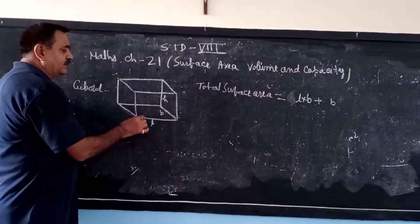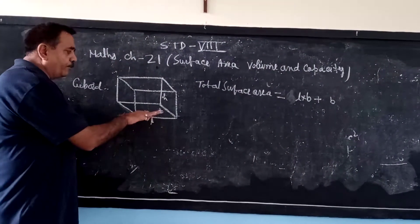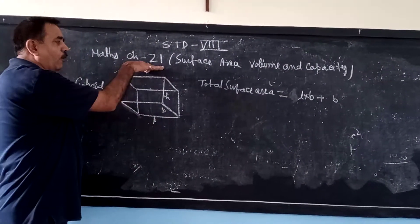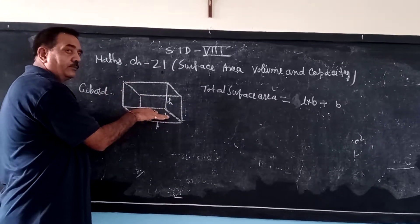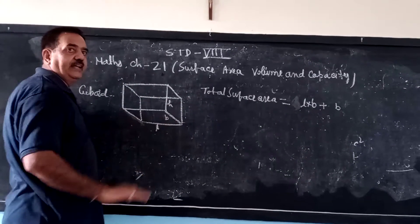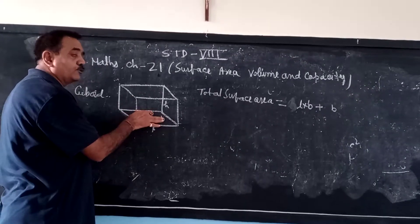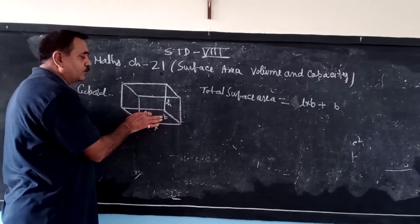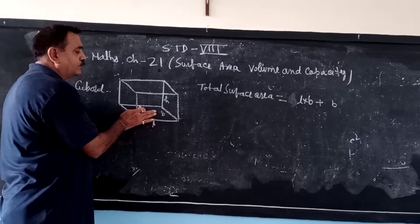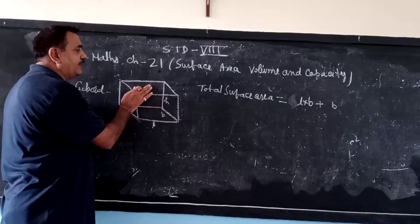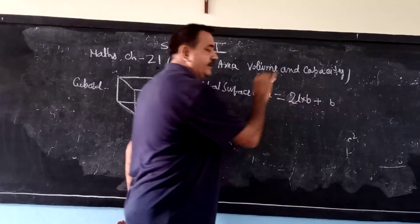This is the cuboid. Say this is length, this is breadth, this is height. So bottom and top — what is the shape of the bottom? The shape of the bottom is a rectangle. What is the area of the rectangle? Length into breadth. So there are two faces like that, so length into breadth plus length into breadth — it becomes twice length into breadth.